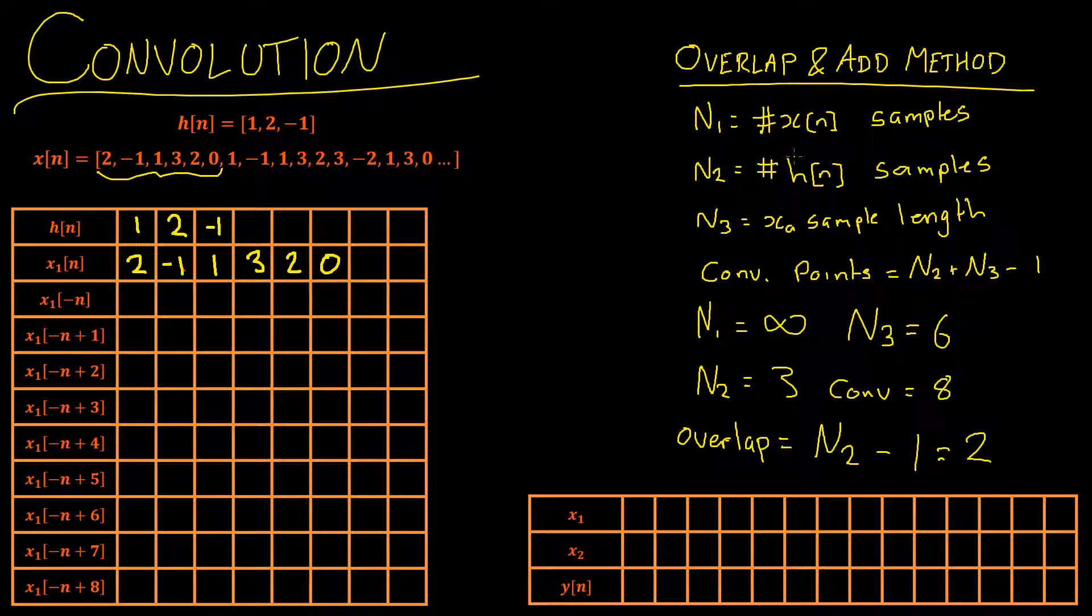So now that we've got all that out the way let's get started. We're going to fill our h of n and x1 of n samples in here and then just as we did with the correlation we're going to append zeros to the rest of it.